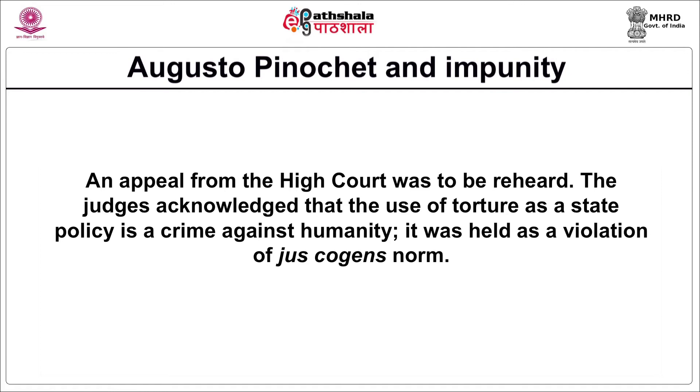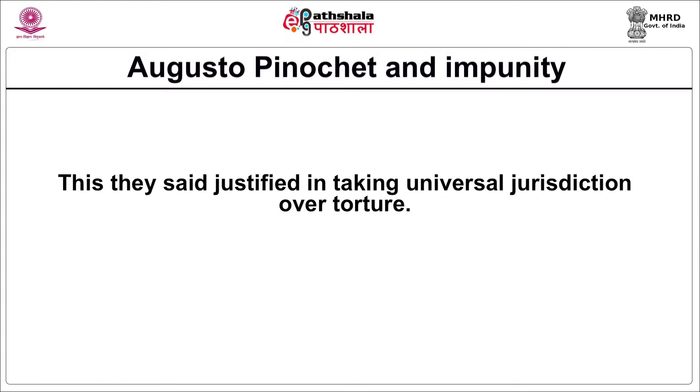Therefore, Augusto Pinochet, for acts committed outside the umbrella of legitimacy, did not get immunity. When the possibility of bias appeared in its ruling, the House of Lords set the judgment aside. The judges acknowledged that the use of torture as a state policy is a crime against humanity, and held it as a violation of a jus cogens norm. This justified taking universal jurisdiction over torture. Jus cogens are certain peremptory norms of international criminal law from which no derogation is permissible — a group of rules evolved through customary practice and recognized by all states as so heinous that they destroy the basic fabric of mankind's collective consciousness. Crimes under this include genocide, war crimes, and crimes against humanity.